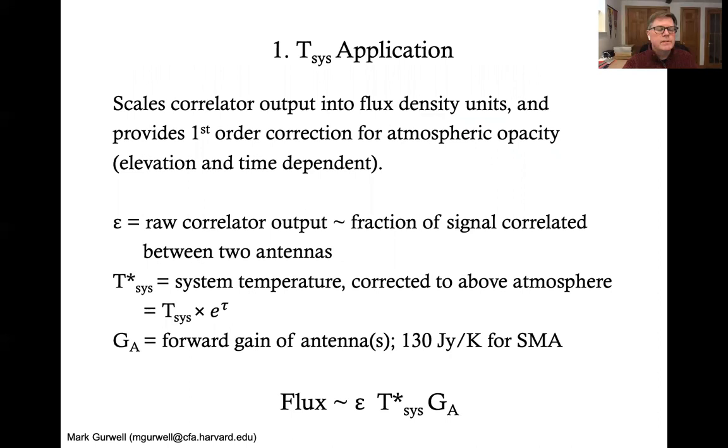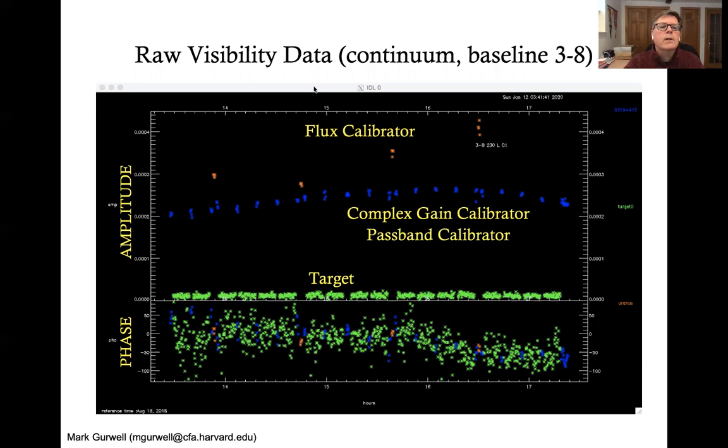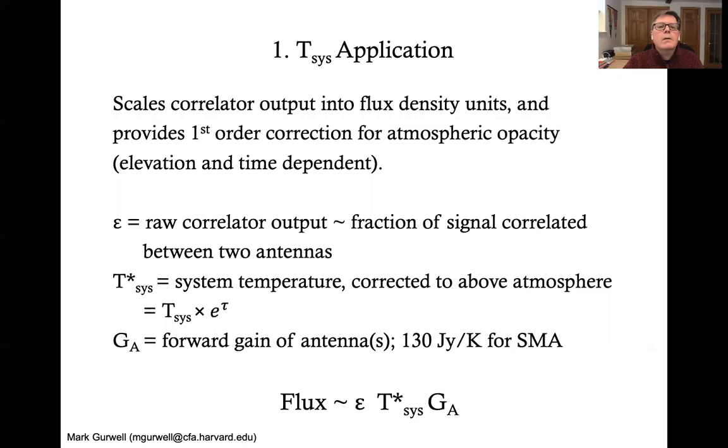So the first step is the TSYS application. So what is this? This scales the correlator output, which you can see here is in some arbitrary units, which is approximately can be considered correlated, a fraction of the correlation signal. So TSYS calibration basically takes the correlator output and puts it onto an approximate flux density scale. And it also provides a first order correction for atmospheric opacity. Therefore, it is time and elevation dependent.